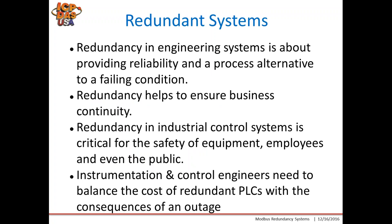Redundancy in engineering systems is about providing reliability and a process alternative to a failing condition. Redundancy helps to ensure business continuity and production. Redundancy in industrial control systems is critical for the safety of equipment, employees, and even the public. Instrumentation and control engineers need to balance the cost of redundant PLCs with the consequences of an outage of production and safety.